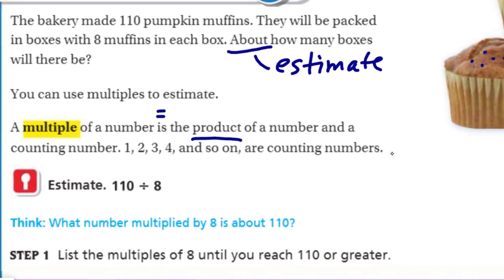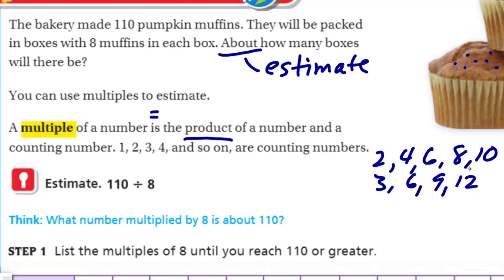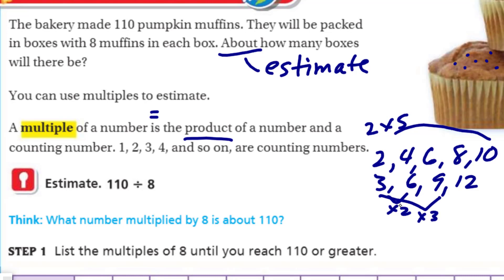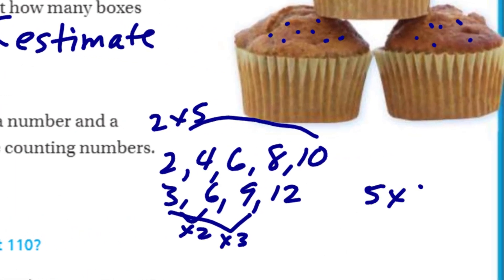A multiple is just a number we derive from skip counting — you guys did this like in kindergarten. Two, four, six, eight — who do you appreciate? You could do three, six, nine, twelve. Those are called multiples. We say that ten is a multiple of two because you can take that number and multiply it by one, two, three, four, and so on. Two times five equals ten, so ten is a multiple of two. You could also say ten is the product of two times five. Eight is a multiple of two. For example, five times eight is 40, so 40 is a multiple of five.